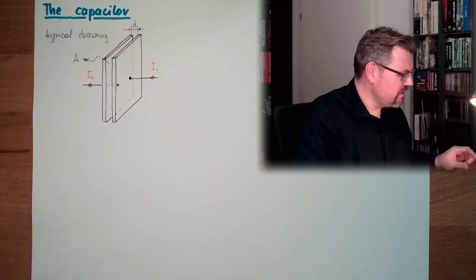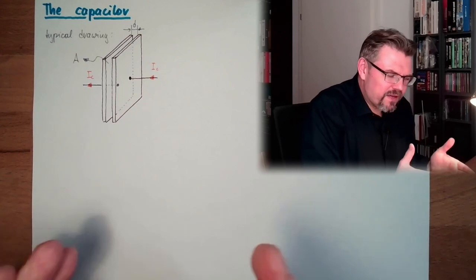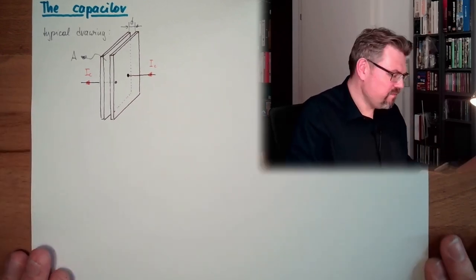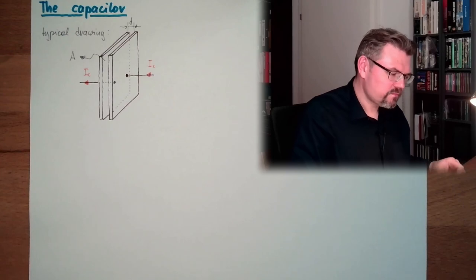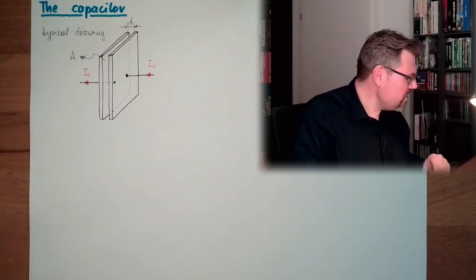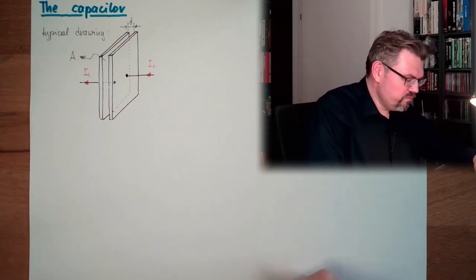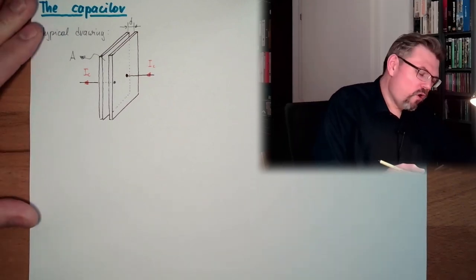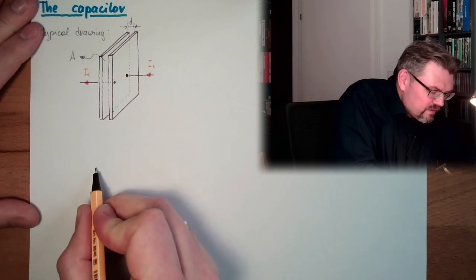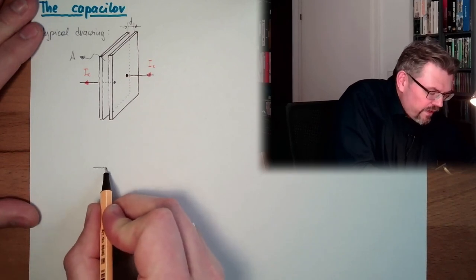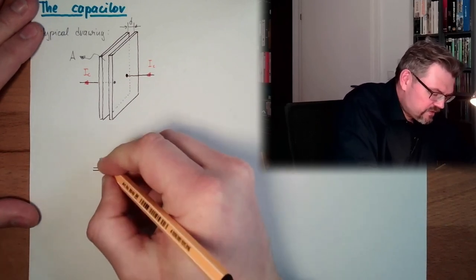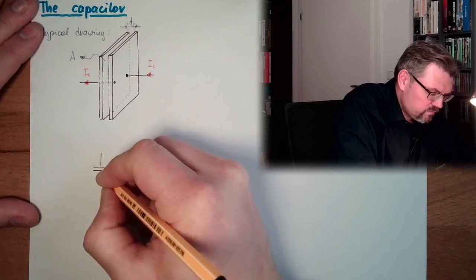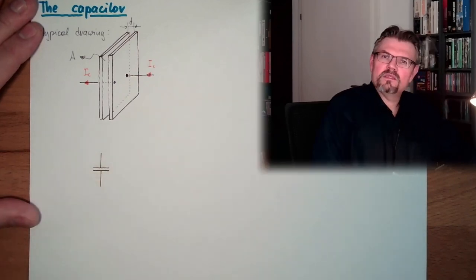This is a typical drawing, because it is easy to understand how this is working. And now I am using the symbol. The symbol also looks like that — we have two plates. That is the symbol of a capacitor.